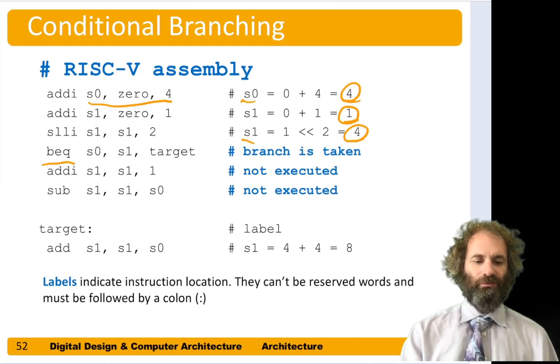If we do a branch on equal of S0 and S1 to a label called target, it compares S0 and S1. They're both 4, so they're equal. So the branch is taken. And now we continue running the program here at target and do add S1 gets S1 plus S0, which is 4 plus 4 makes 8. And we don't execute these two instructions.